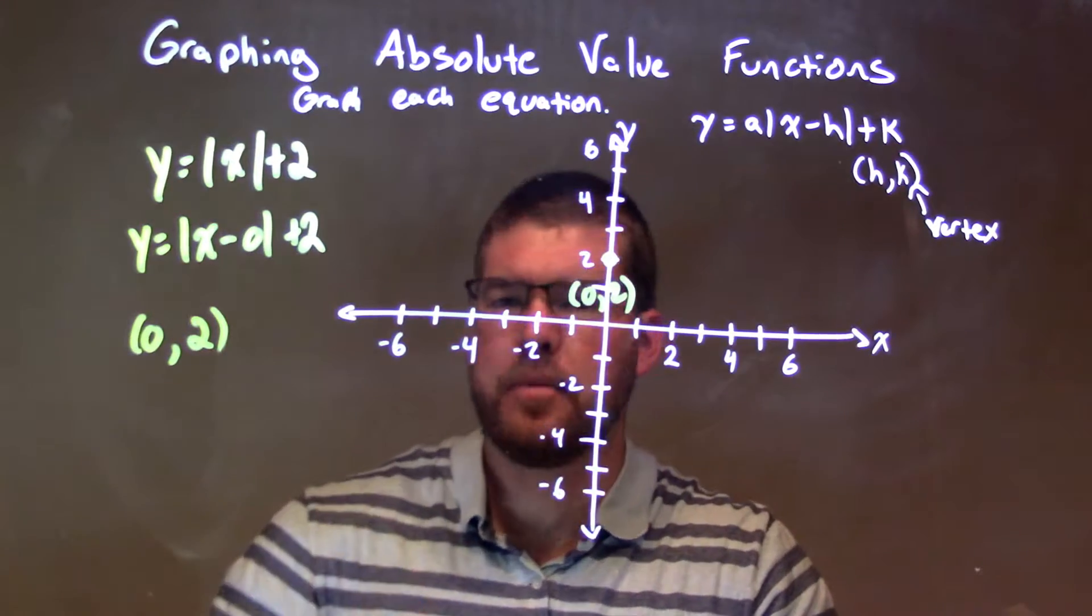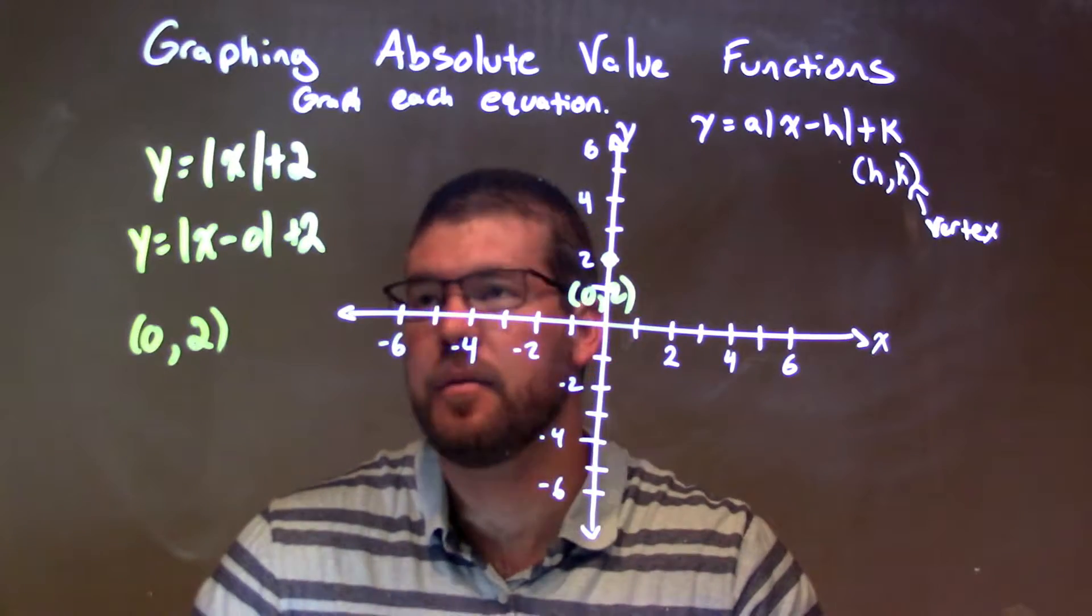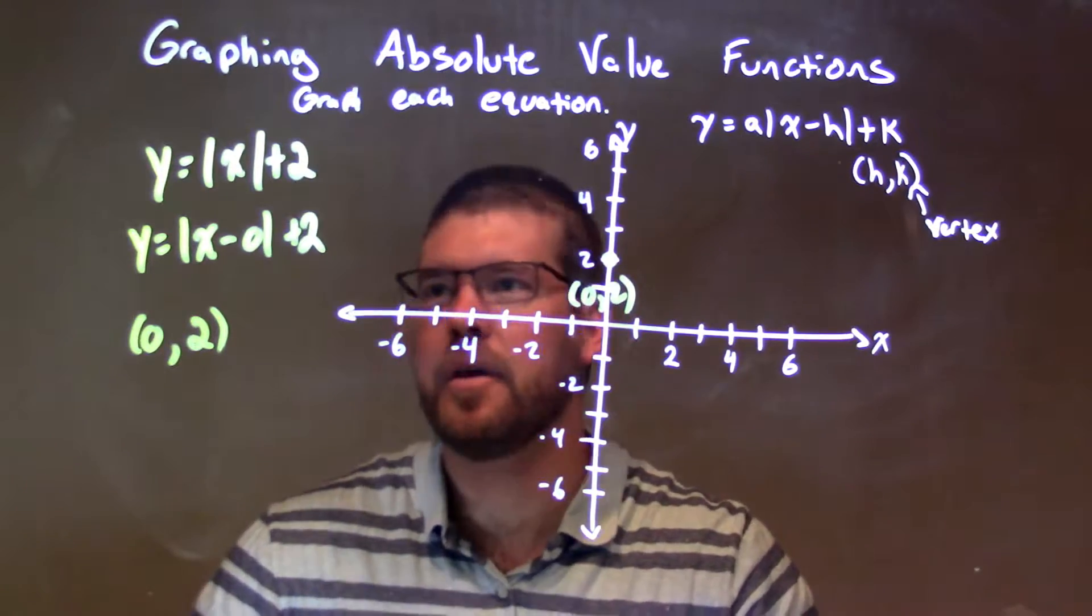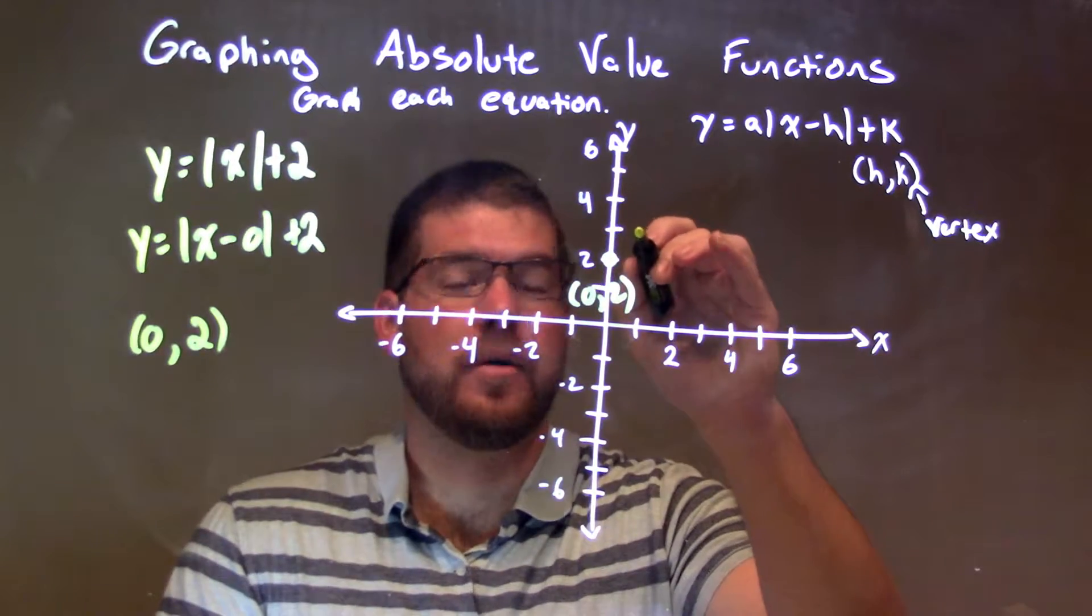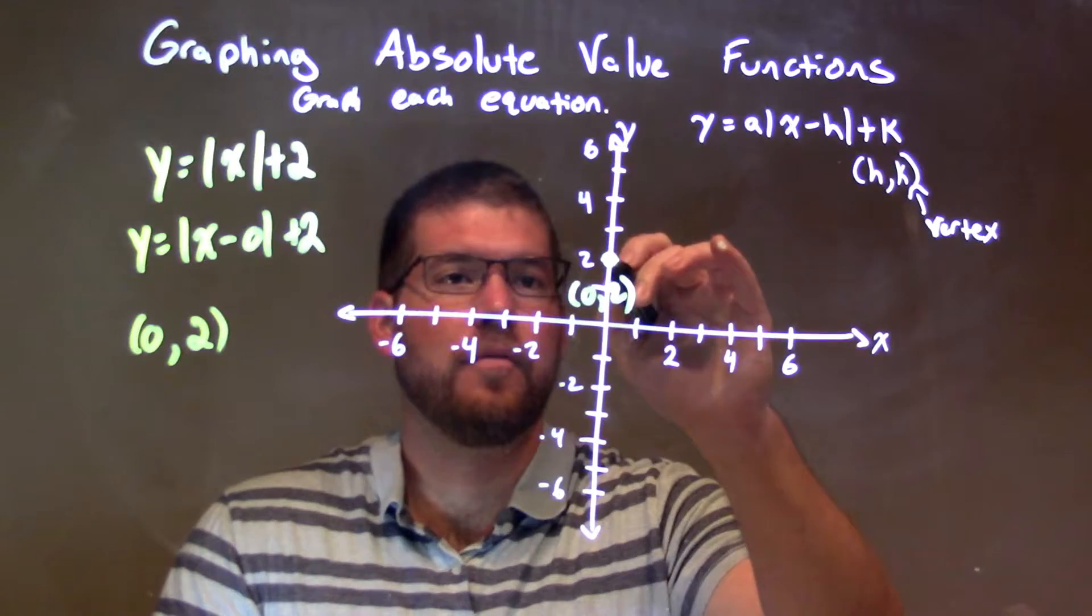Okay, in front of our absolute value, it's positive. All right, so our a value is a positive 1. There's nothing there, positive 1, so that's a slope of up 1 over 1, right? So we have a slope of positive 1.